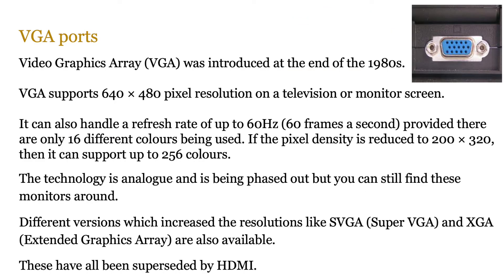The next port we're going to look at is a legacy port — the VGA, or Video Graphics Array port, which was introduced at the end of the 1980s. VGA supported 640 by 480 pixel resolution, which was similar to a TV screen of that time. It could output to monitors — generally the old fashioned cathode ray tube type monitors. It could handle a refresh rate of up to 60 Hz, which is basically 60 frames per second, and there were only 16 different colors available at that resolution.